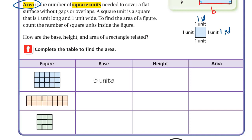Let's complete this table to find the area. We have the figure, the base, the height, and the area. For the first figure, the base is 5 units — counting one, two, three, four, five — so he chose the bottom side. The height must be the perpendicular side, which counts one, two, three — so 3 units as the height. For the area, we count the number of squares inside: one through fifteen. So we have 15 square units.